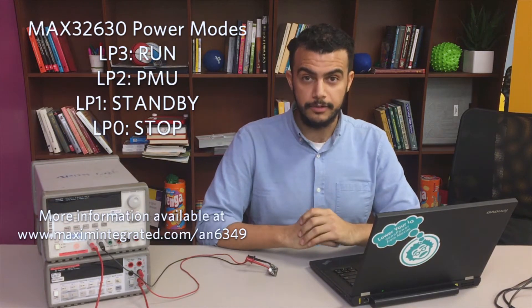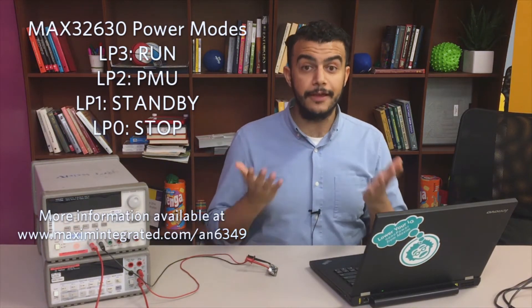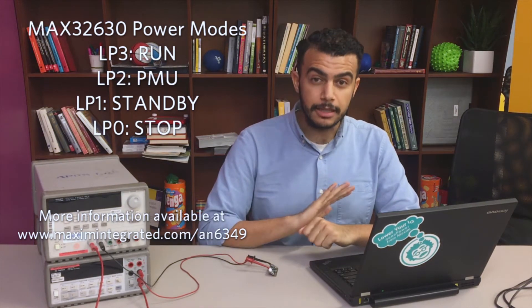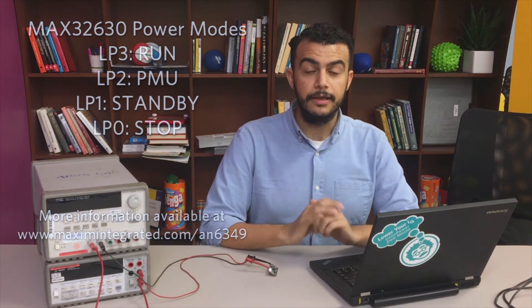LP3 is run mode, and that's the default state with everything powered up. LP0 is stop mode, and that's the lowest power state. In LP0, only the wake-up circuitry and the real-time clock are powered. LP0 is perfect for my application. I can keep the real-time clock circuit running while in deep sleep mode and literally shut off every other part of the microcontroller.